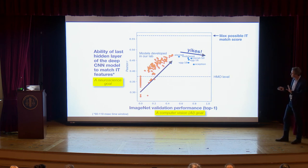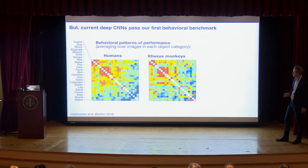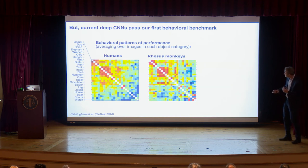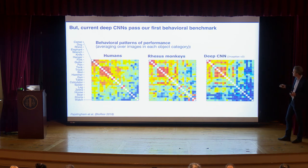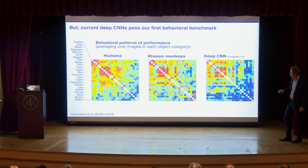One thing these models did accomplish was explaining the behavioral patterns at this grain of object resolution. Here are humans and monkeys — remember I said they were the same — and here's the deep CNN, Inception V3. They're all very similar to each other and had achieved this behavioral benchmark.